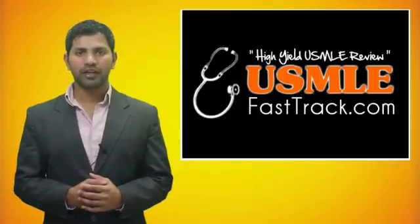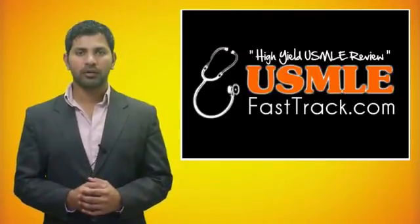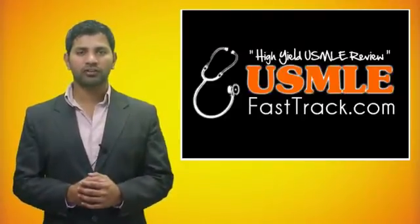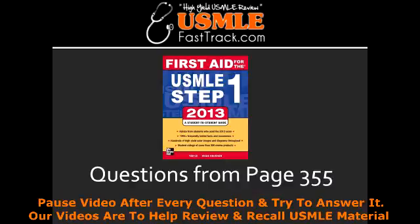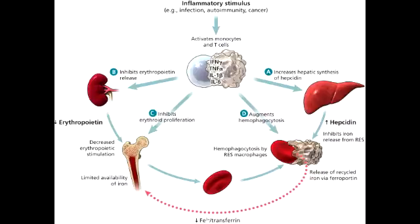Welcome to USMLEFastTrack.com. The section we're going to talk about today is from First Aid for the USMLE Step 1, 2013 Edition, Page 355: Non-Hemolytic Normocytic Anemia. Name the three Non-Hemolytic Normocytic Anemias.